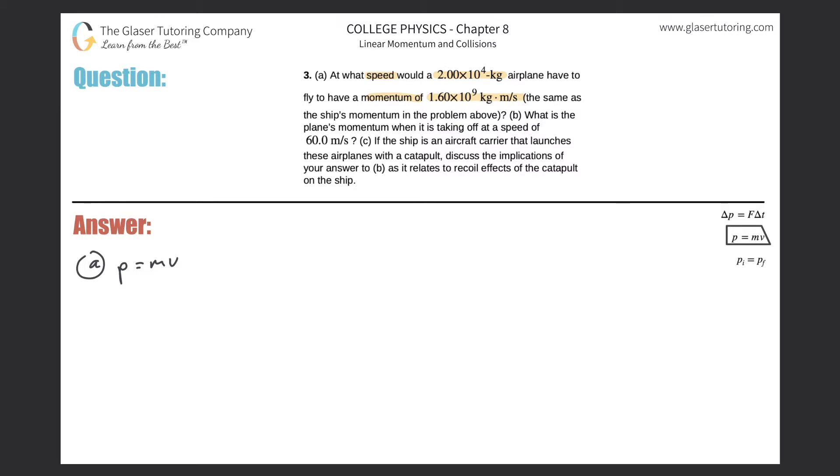So if we want to know speed, let's just solve for speed right off the bat. Divide M out of both sides. Therefore, the velocity is equal to the momentum divided by the mass.